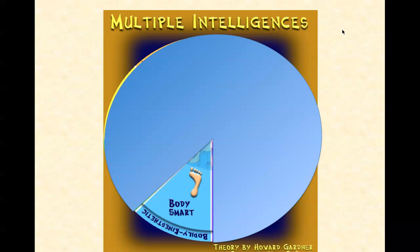Then we have bodily-kinesthetic intelligence. These folks use the body effectively, like dancers or a surgeon. They have a keen sense of body awareness and like movement, making things, and touching. They communicate well through body language and can be taught through physical activity, hands-on learning, acting out, and role playing. Tools for these learners include equipment and real objects.